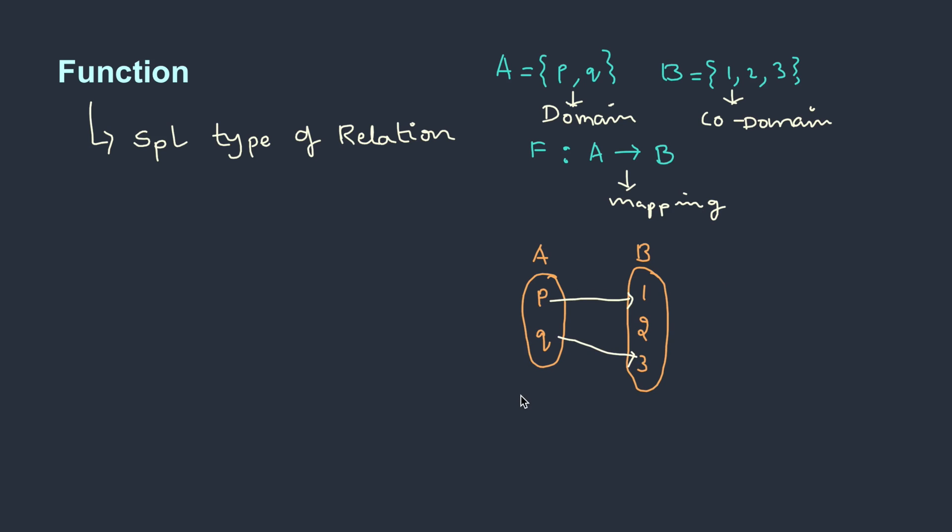So P may be mapped with 1 and Q is mapped with 3. This mapping has the elements P and Q. Here you see that only 1 and 3 are used. 2 is not used. This set remains same, it's called domain. This particular set is called range, or the set of mappings. These elements are called images and these are called pre-images. So that's how we represent the function in a picture.